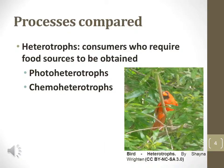Heterotrophs are known as consumers because they must consume organic chemicals of some type to produce energy. Photoheterotrophs can store light energy but cannot do so on carbon dioxide alone and must use molecules produced by another living thing. Chemoheterotrophs simply obtain all of their energy from molecules produced by another organism. Humans are chemoheterotrophs because we must eat food to create all of our energy and cannot use the sun as an energy source.